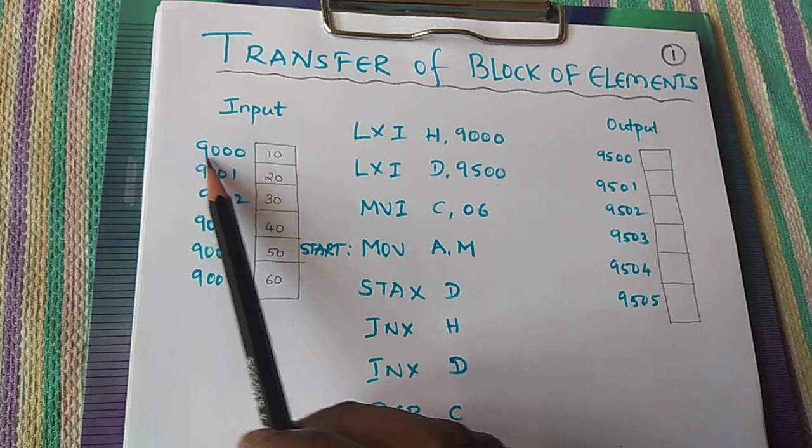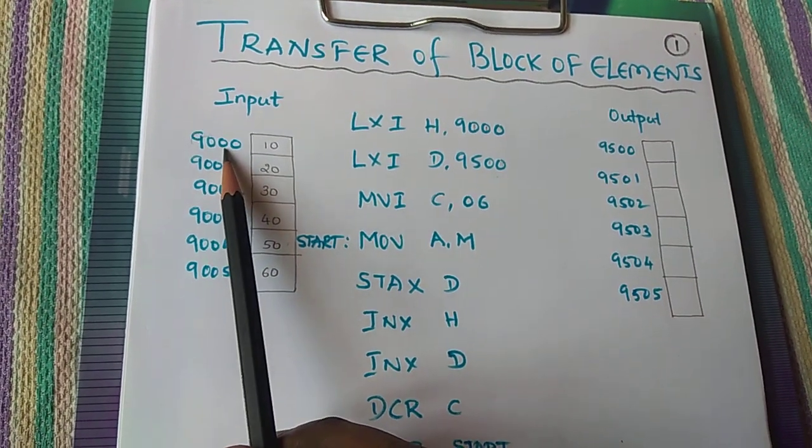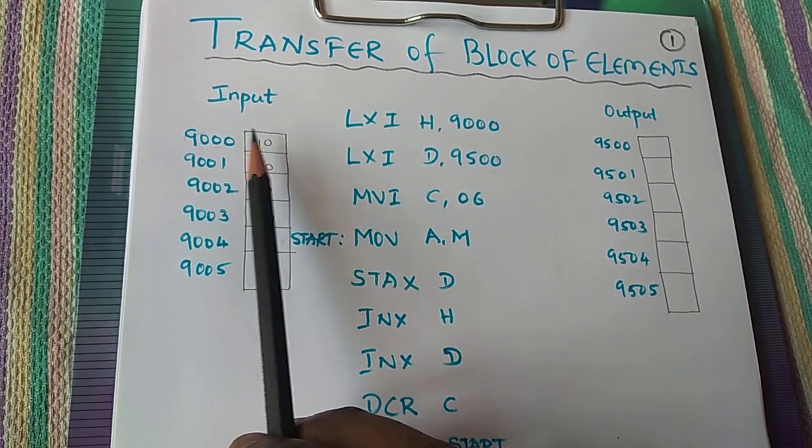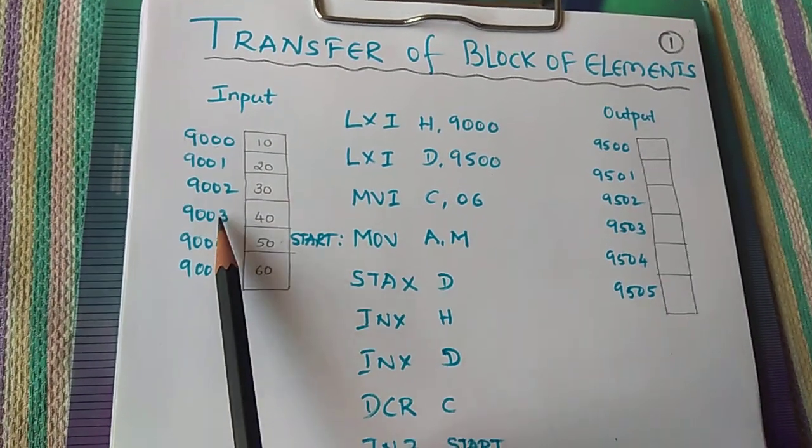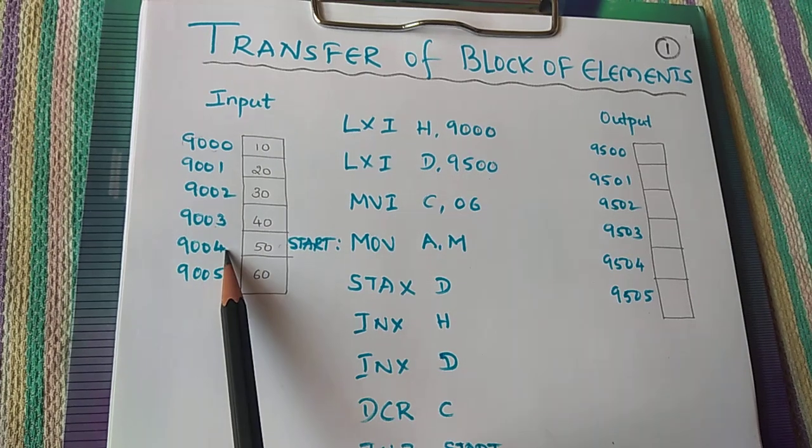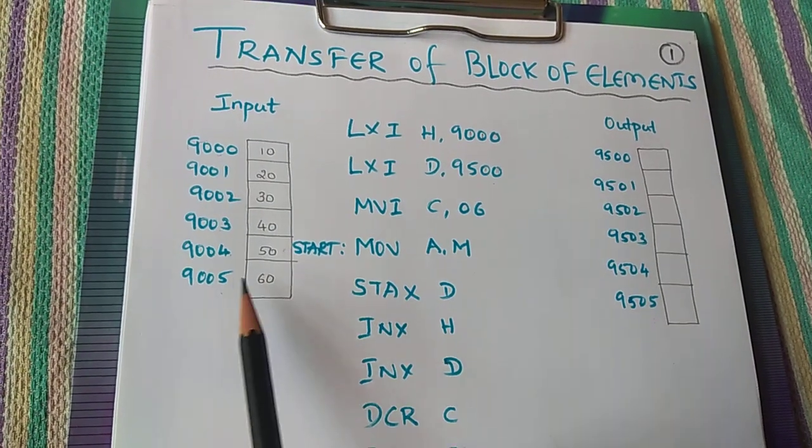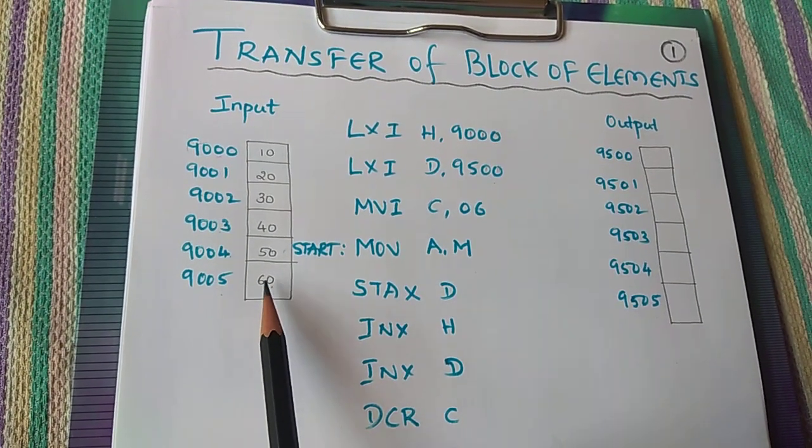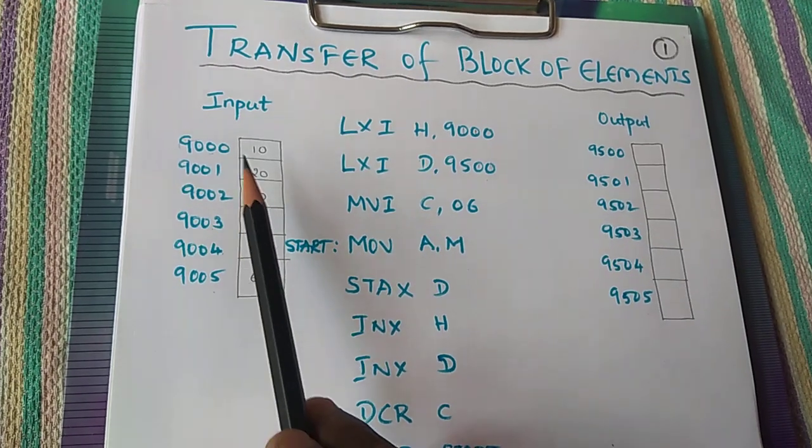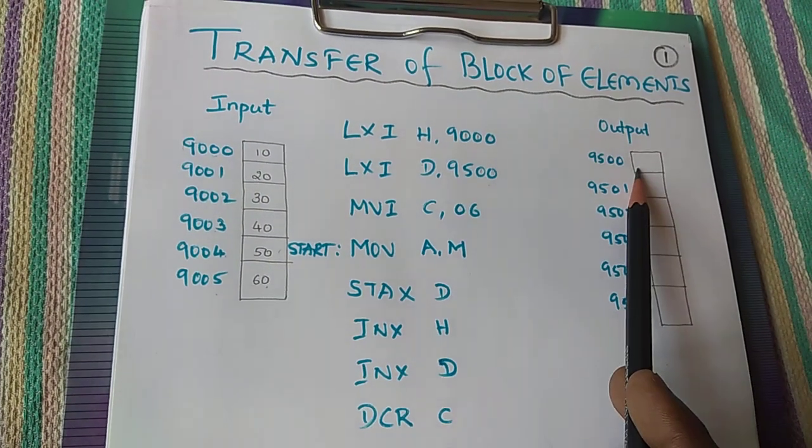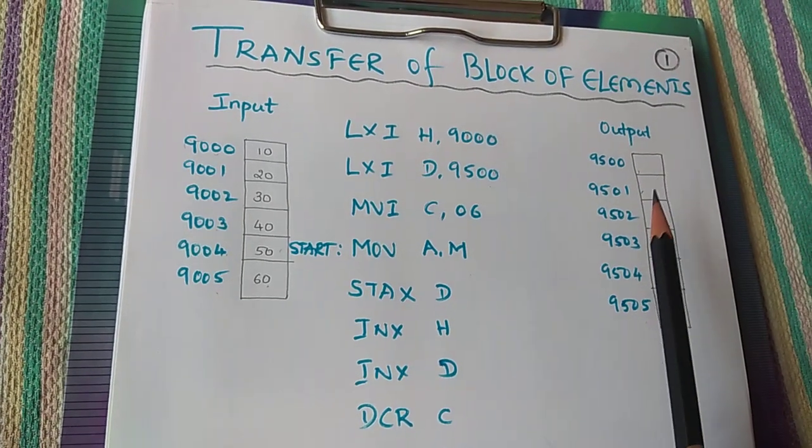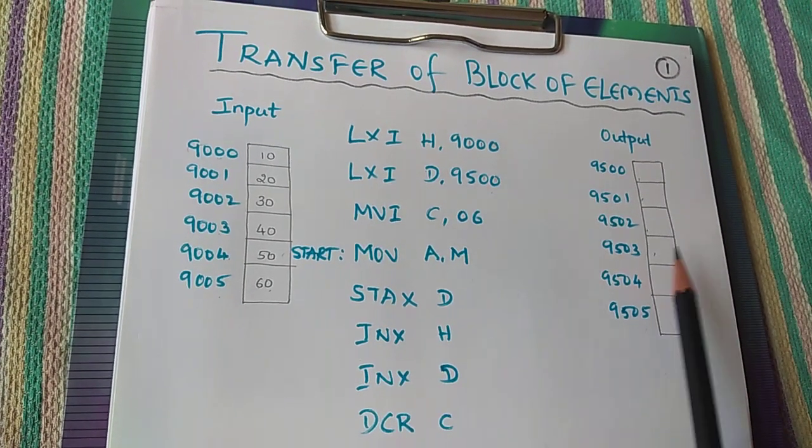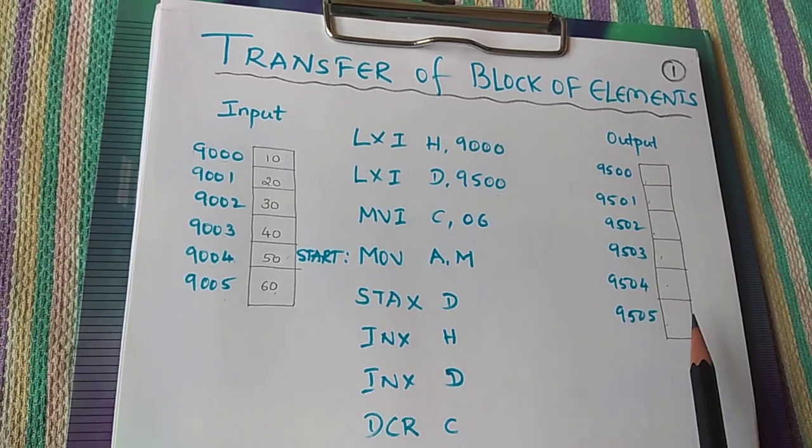So we start with the inputs. The location 9000 contains 10, 9001 contains 20. In the same manner 9002 contains 30, 9003 contains 40, 9004 contains 50, 9005 contains 60. So we have to write the program in such a manner that this 10 should come to the 9500, 20 should come to 9501, 30, 40, 50, and 60.